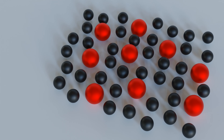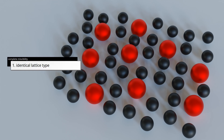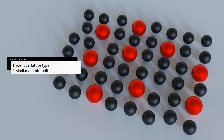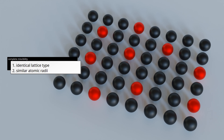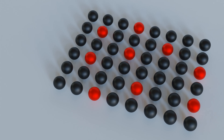Only under three conditions is the solubility of the two substances unlimited over the entire mixing range. First, the substances must have the same lattice type. Second, the components must have similar atomic radii — as a guideline, they should not differ by more than 15%. Third, the substances must have similar chemical properties. These conditions are also known as the Hume-Rothery rules. Only under these conditions can any alloy concentration be produced without a miscibility gap, and such solubility over the whole mixing range is called a complete solid solution series.